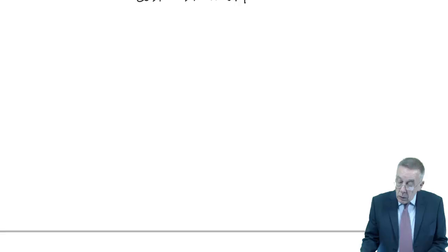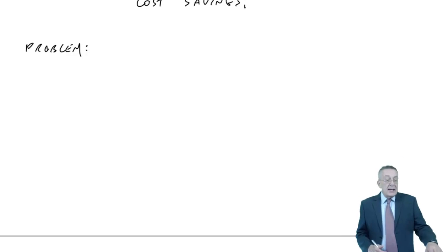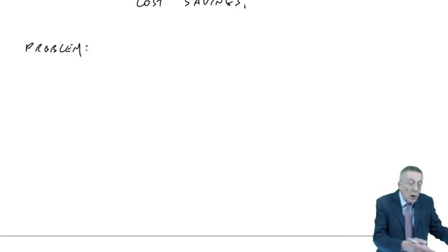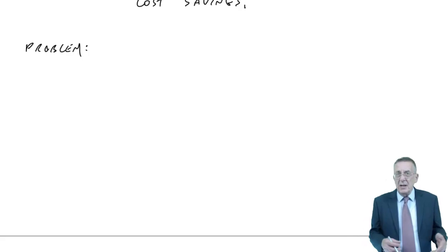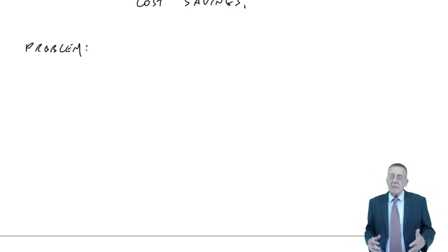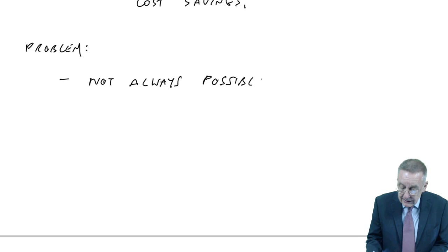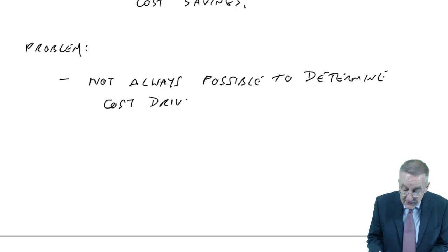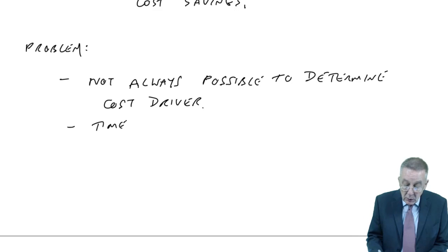So those are the advantages. However, regardless of how much better it is, the problem in real life is it's not always easy to determine what causes an overhead. In the exam, no problem — we're told. But what about something like rent of the factory? That's an overhead, but what causes the rent? Is it the size of each unit? It starts to become rather impossible. So the real problem in practice is it's not always possible to determine the cost driver — i.e., what causes the cost. And of course, the exercise can be time-consuming, looking for cost drivers.